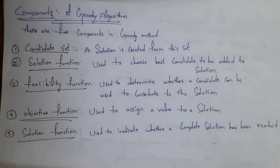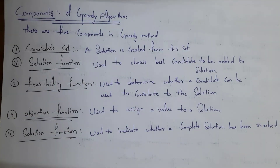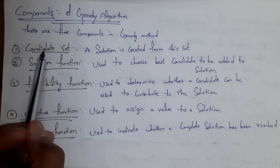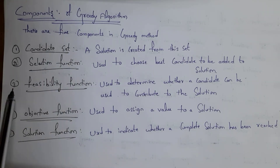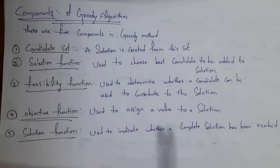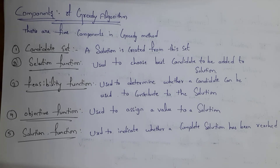Components of greedy algorithm — there are five in total. First: candidate set — a solution is created from this set. Second: selection function — used to select the best candidate, which is then included in the solution. Third: feasibility function — determines whether a candidate is suitable for the solution. Fourth: objective function — assigns values to the solution. Fifth: solution function — indicates whether a complete solution has been reached.